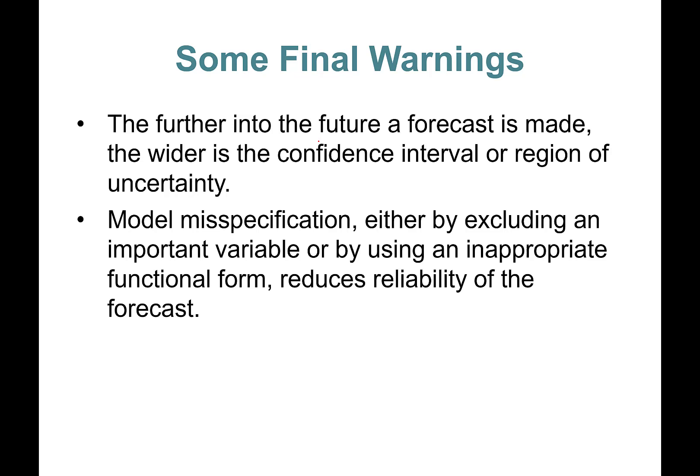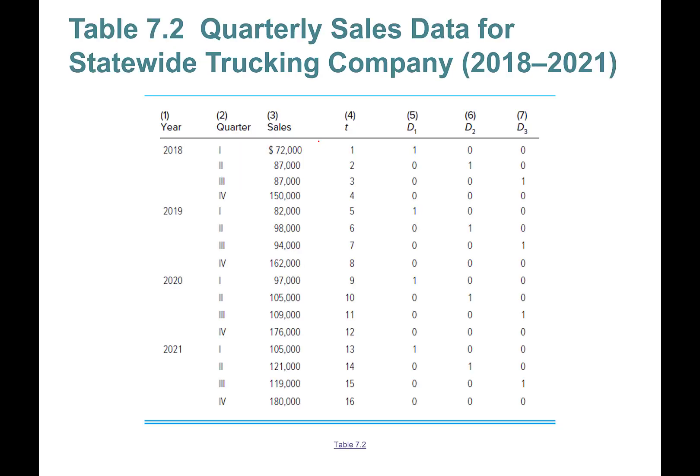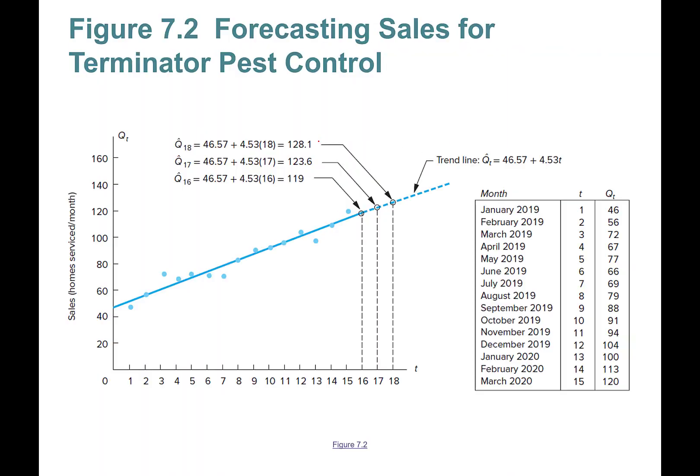Model misspecification — either by excluding an important variable or using an inappropriate functional form — reduces the reliability of the forecast. Additionally, forecasts are incapable of predicting sharp changes that occur because of structural changes in the market, such as COVID-19.